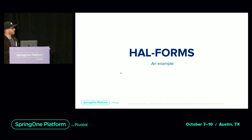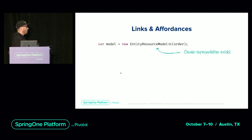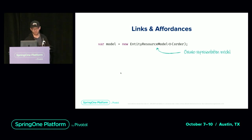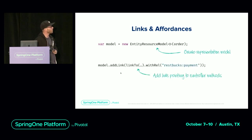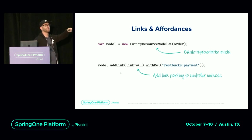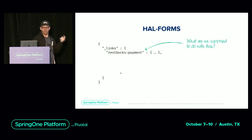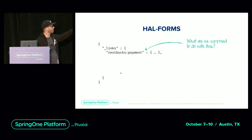Let's try to make more sense of that with a HAL Forms example. We start with our representation model — an EntityRepresentationModel — we put our order into it, then add a link to the payment controller method. That results in the link being included in the representation. I'm using a special notation 'restbox:payment' — I'll get back to that. That gives us a lot — basically everything you've seen in the demo — but what you still have to encode in the client is how it's supposed to interact with the resource that link points to.